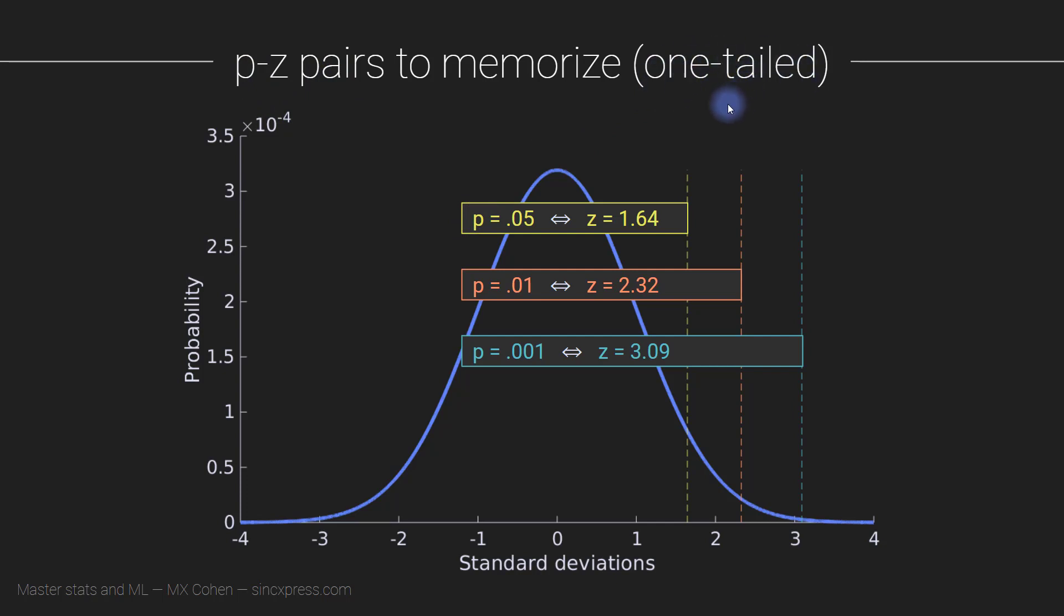Here we get to p-z pairs, this is actually the title of this lecture. For a one-tailed test, I'm going to show you the two-tailed test on the next slide. For a one-tailed test, a z-value of 1.64 corresponds to a p-value of 0.05. What does that mean? That means if we take 0.05 as our statistical significance threshold, then finding a p-value of 0.05 means that our observed data are 1.64 standard deviations away from the mean of the null hypothesis distribution.